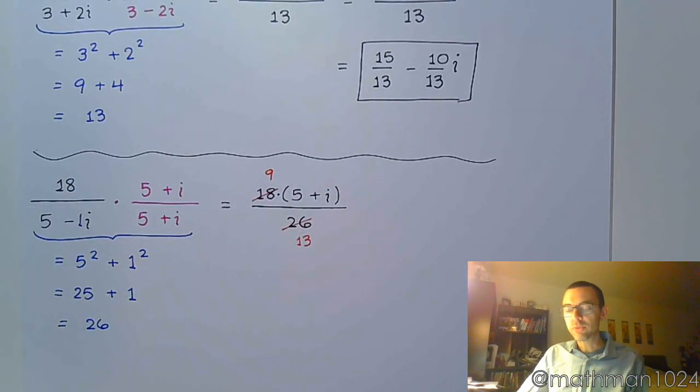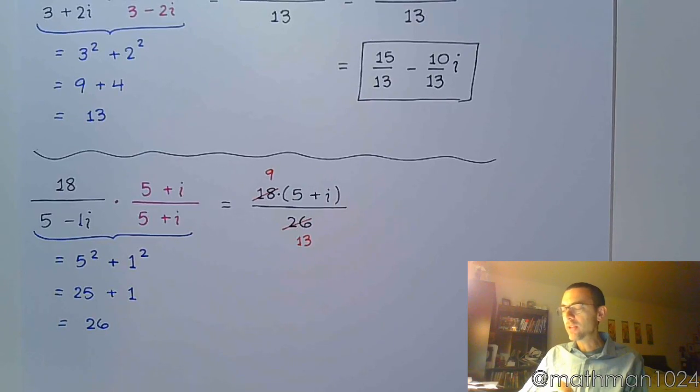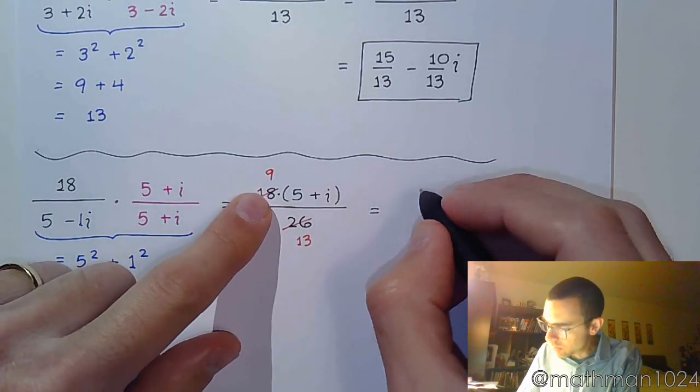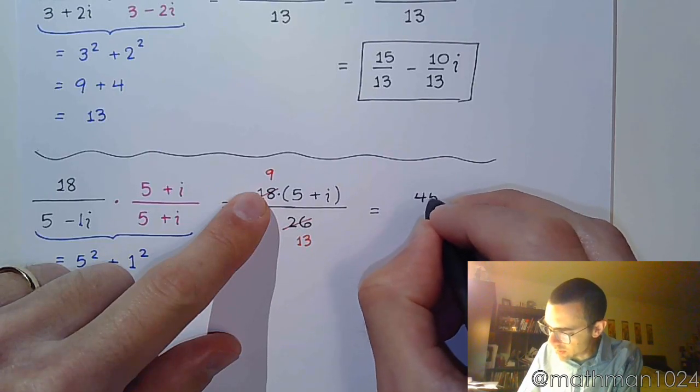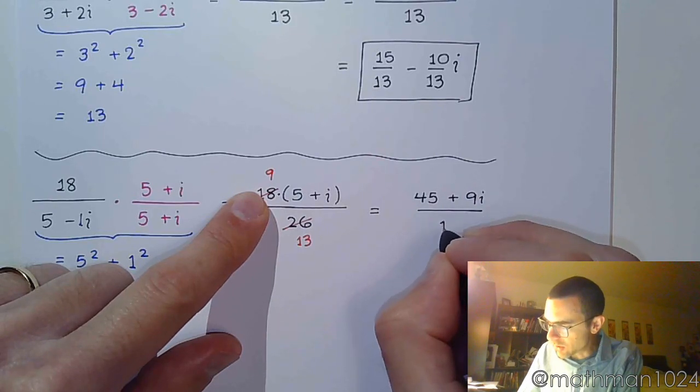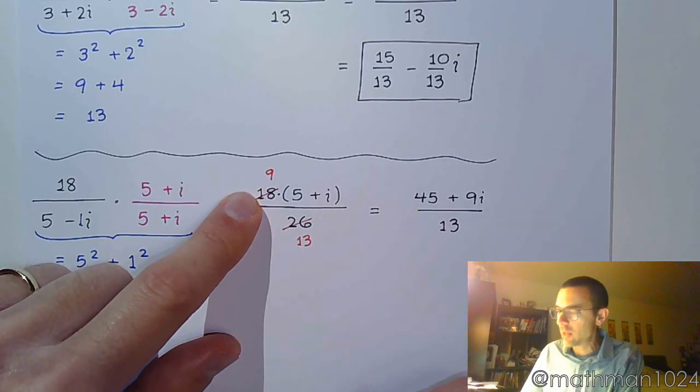2 goes into 18 nine times, and 2 goes into 26 thirteen times. You don't have to simplify right here, but I think it's really the best thing for us because it lets us get to smaller numbers before I multiply and get to larger numbers. Now, let's distribute in the numerator. So this is 45. 9 times i is 9i, and this is all over 13.